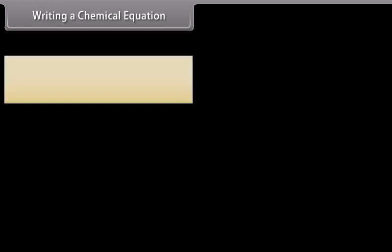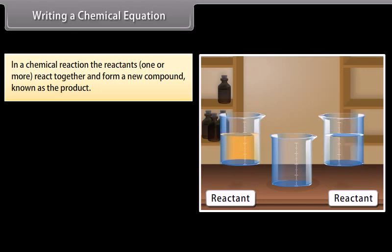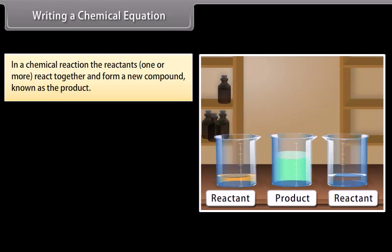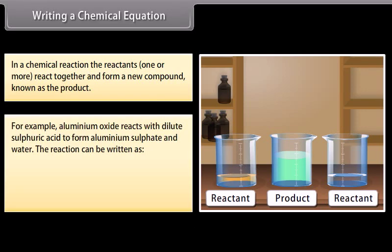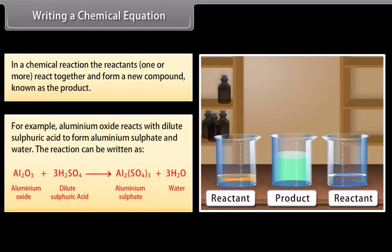Writing a chemical equation: In a chemical reaction, one or more reactants react together to form a product. For example, aluminum oxide reacts with dilute sulfuric acid to form aluminum sulfate and water. The reaction can be written as: aluminum oxide plus dilute sulfuric acid gives aluminum sulfate and water.